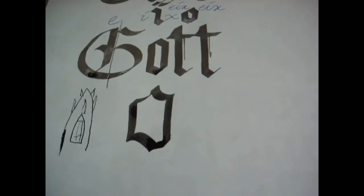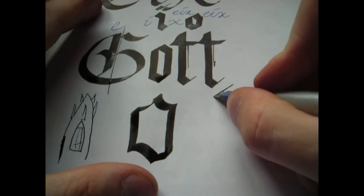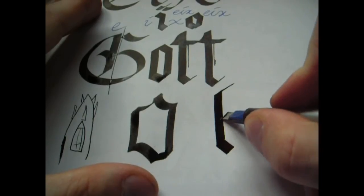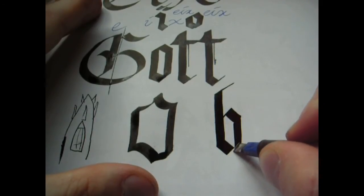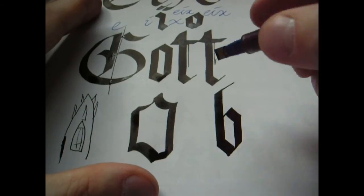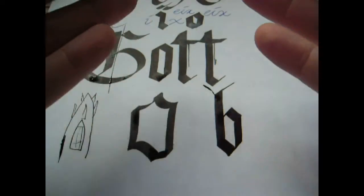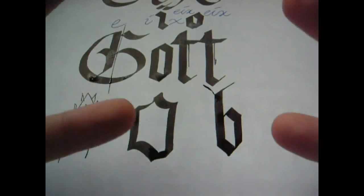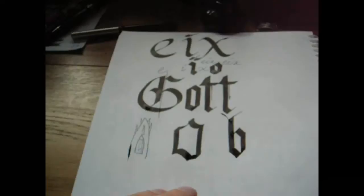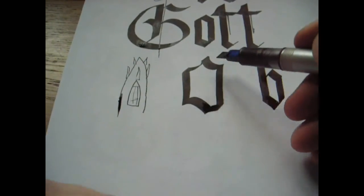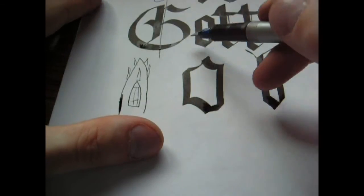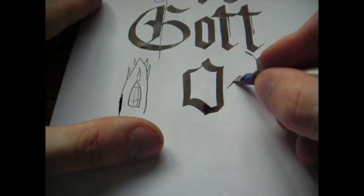All of this points upwards. If you have a nice letter like a B, I screwed it up a bit there, but that's fine. Everything points up, and it points up because it points towards God. This was made at a time when the world was full of religion in the Middle Ages. Everyone was afraid of God and going to heaven, going to hell, etc. So everything, it's a pointy script.